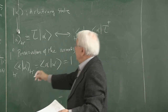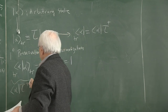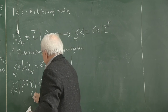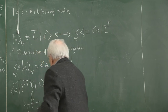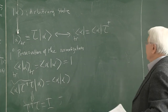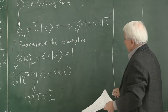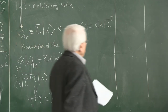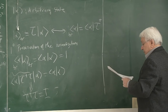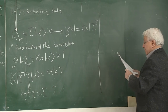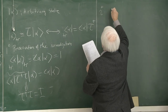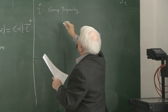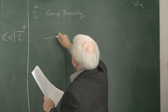Substituting the definitions, I get ⟨α|T†T|α⟩ = ⟨α|α⟩, which obviously tells me that T must be unitary. So the first property is unitarity, which follows from the preservation of normalization.